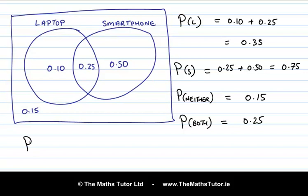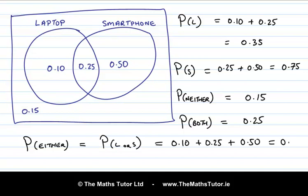Finally, what's the probability of having either a laptop or a smartphone? We add up the probabilities for those three regions: 0.10 plus 0.25 plus 0.50, which adds up to 0.85. If we add up all the probabilities for all regions in this Venn diagram, they add up to 1, because no matter who we pick, they must fall into one of the categories — smartphone only, both, laptop only, or neither. So it's a certainty, a probability of 1.